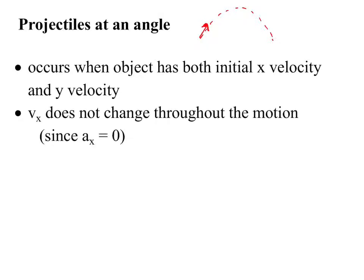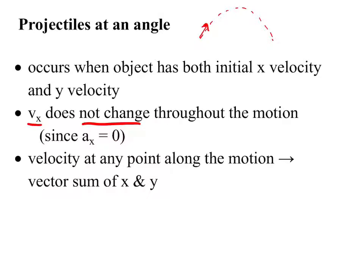One thing remains the same from horizontal projectiles: Vx does not change. Something accelerates if it's being pushed or pulled. There's nothing pushing or pulling in the x direction — nothing pushing or pulling horizontally. In the y direction, however, it is being pushed down towards the ground by gravity, so we have acceleration due to gravity. We know that velocity in the x direction is not changing, but velocity in the y direction absolutely is.